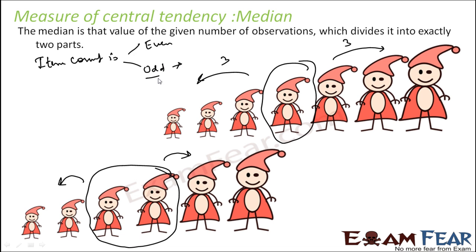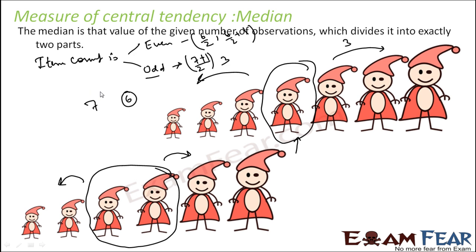So there are two options: the item count is either odd or even. If it is odd, for example seven, you just get the middle number — (7+1)/2 = 4th number is the median. If it is even, for example six, you take the 6/2 and 6/2 + 1 positions, then take their average. In summary: odd number of items — easy to find the middle number, that is the median. Even number of items — you get two middle numbers, take the mean of them. Data must be arranged in ascending or descending order — that is critical.